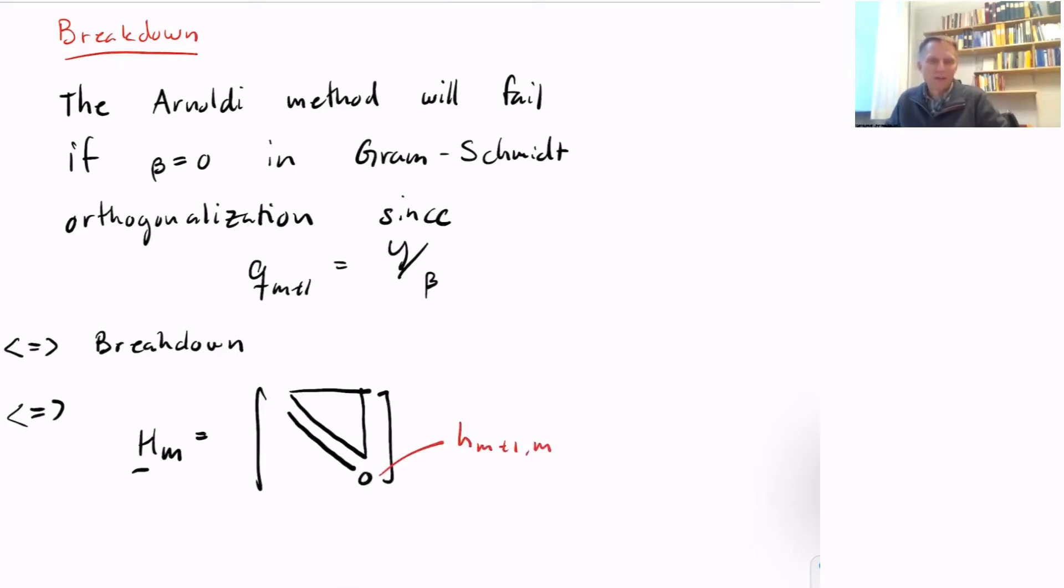Since we take the Gram-Schmidt coefficients and put them in the last column of our HM matrix, having breakdown means that the last row of your HM matrix is identically zero. So the last element H_M+1,M is zero—that's equivalent to having breakdown, so beta equals zero.